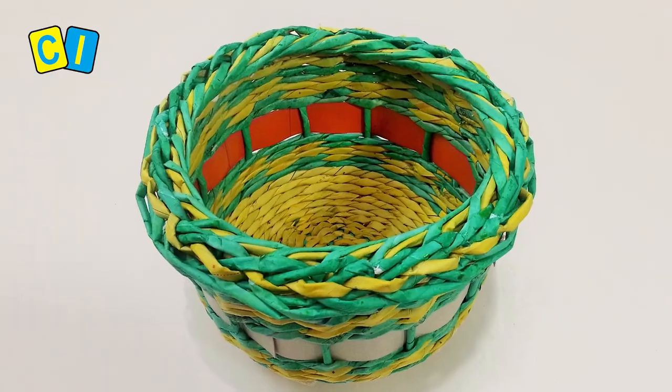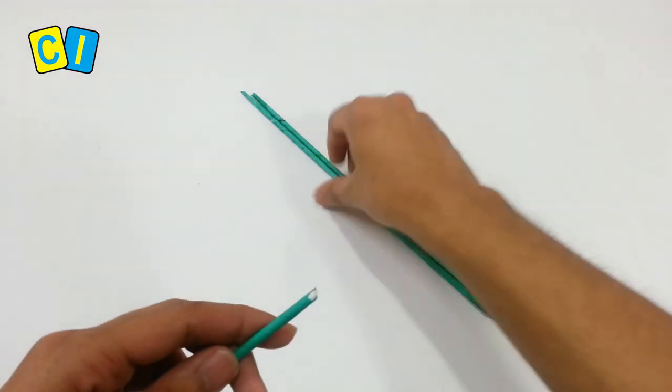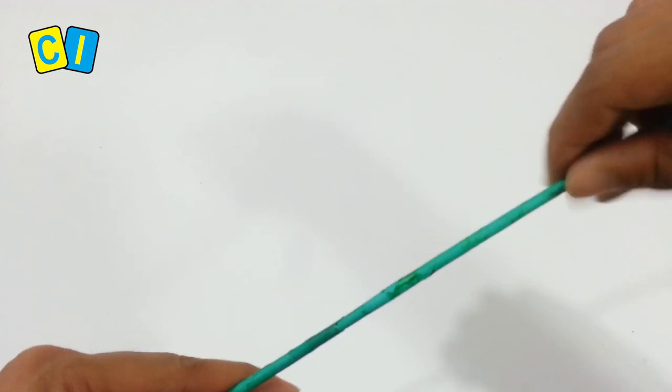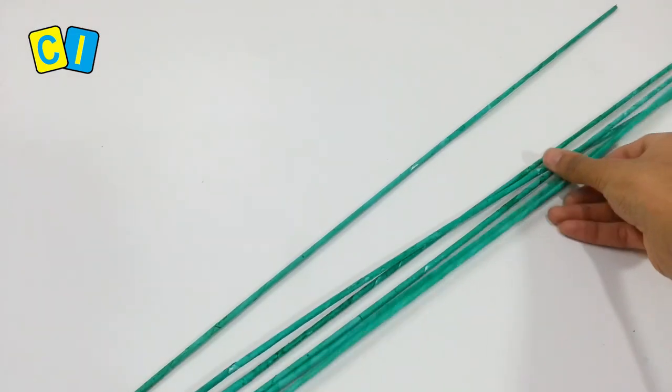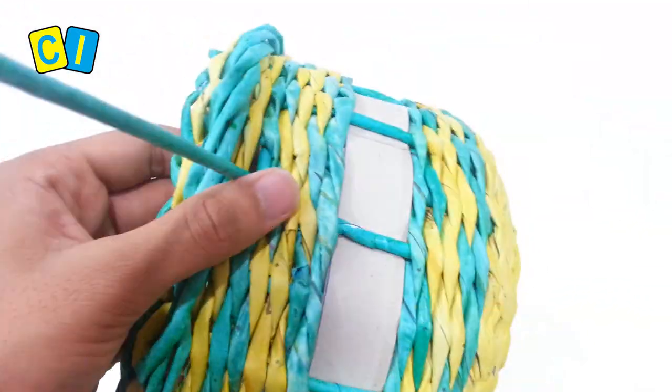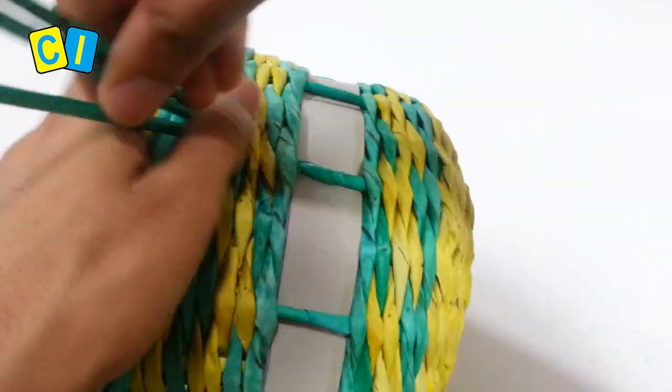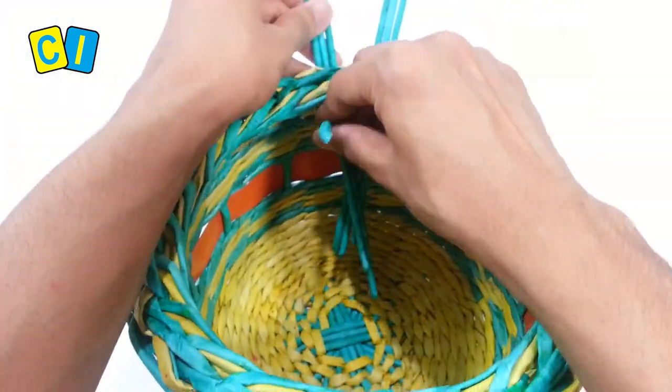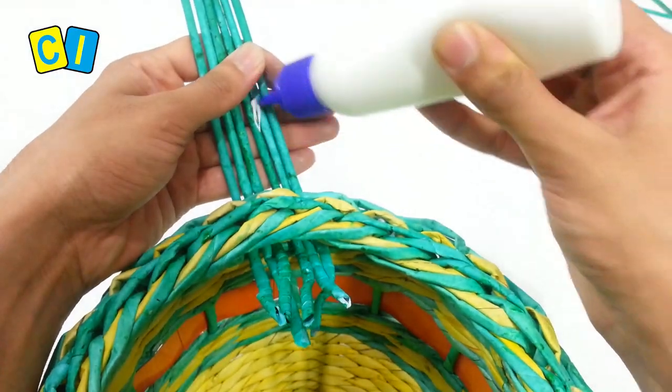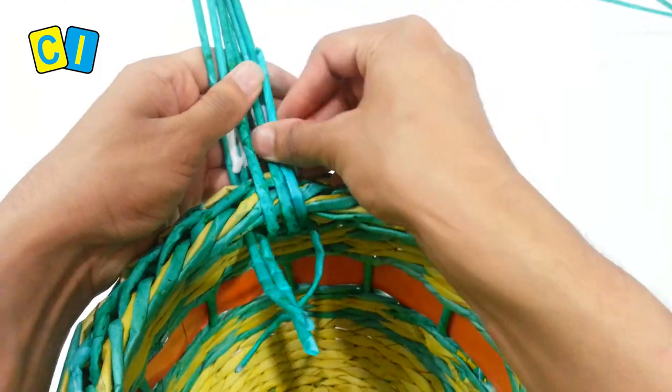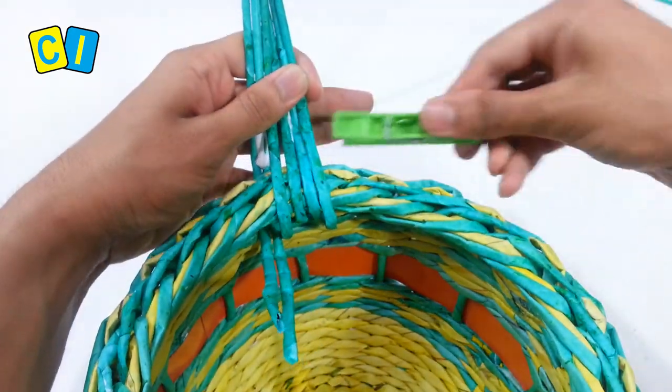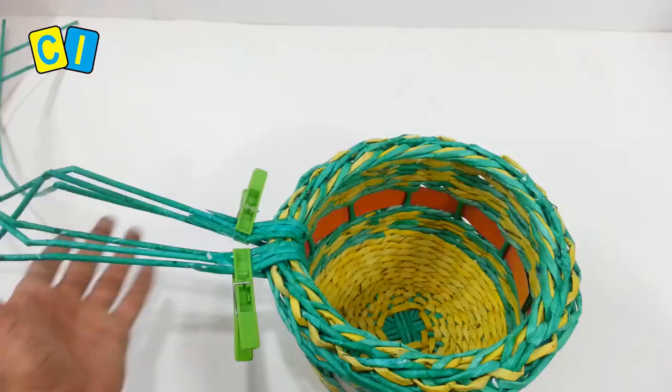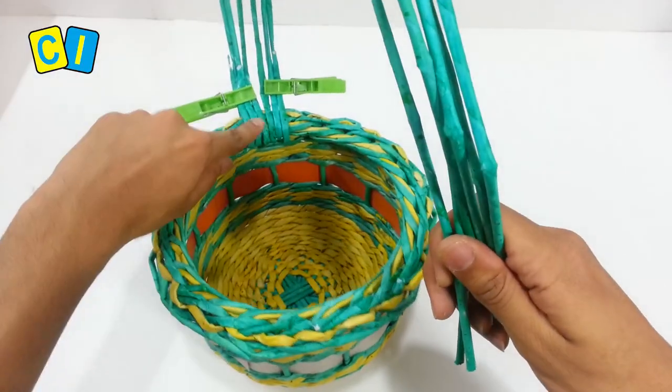Now we will make the handle. Take three green tubes and join them to make a long tube. Add a drop of glue and insert the tube. Make six such tubes and insert them two rows below the edge. Insert the other three between the next poles. Bend the tubes around the edge, apply glue, and use pins to hold the tubes. Bend the tubes and insert at the opposite end.